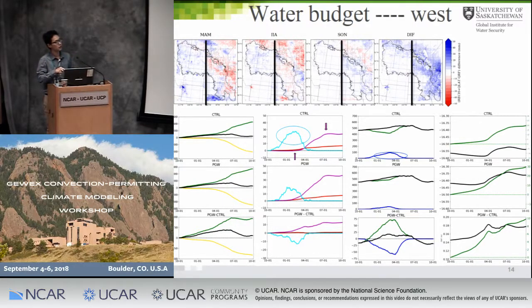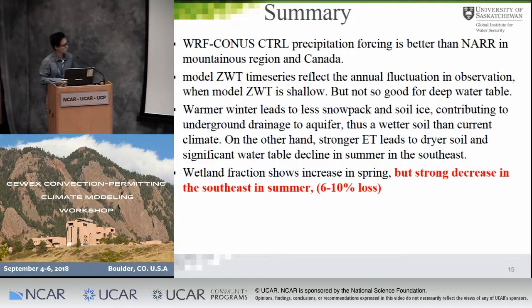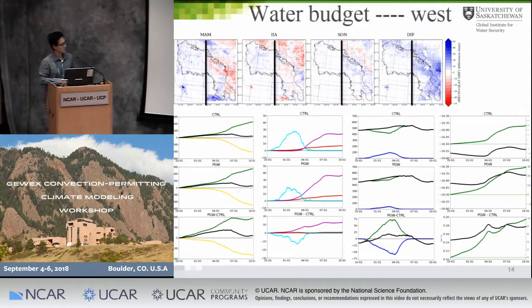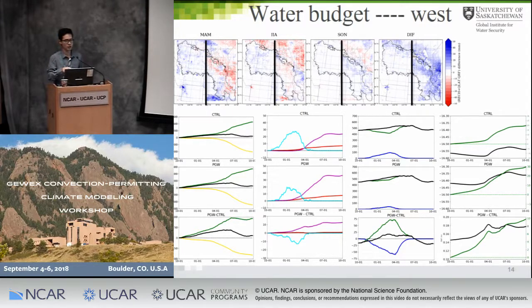The western domain is very similar to the eastern part, except in the late summer. In the eastern part of the domain, precipitation at the end of summer is only about 50 millimeters of increase. But in the western part of the domain, at the end of summer it is about 100 millimeters increase of precipitation going into the western domain.